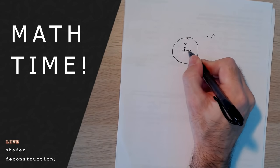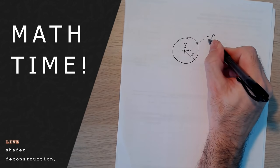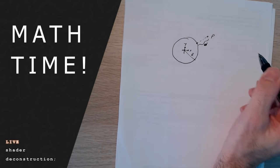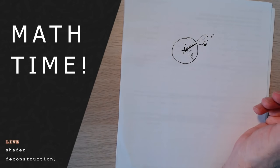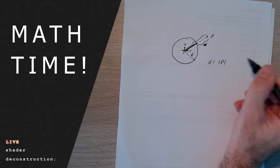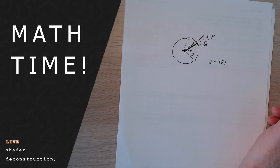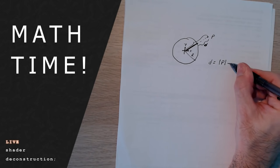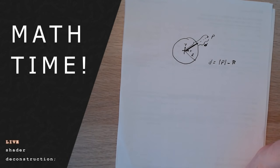We have a point P and a sphere of radius R. The distance to the sphere — this is what we want to compute — is simply the distance from the point to the center minus the radius. So the distance D is the length of P, using vertical bars to define the length, which you can compute with Pythagoras' theorem. Then you subtract the radius R. That's your distance — easy.